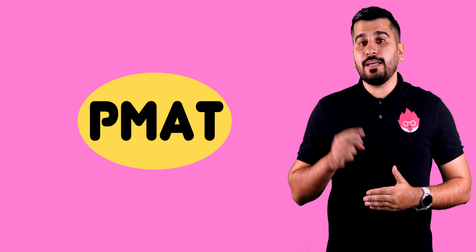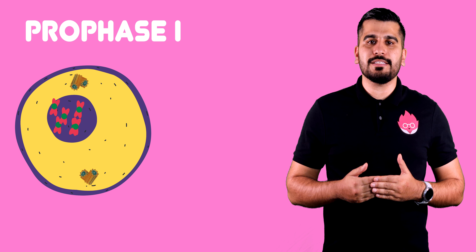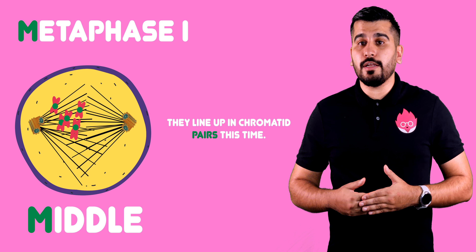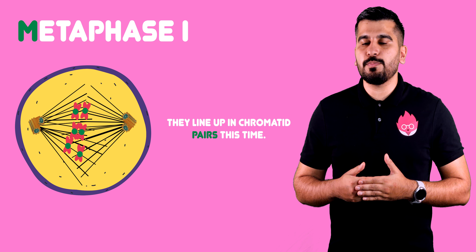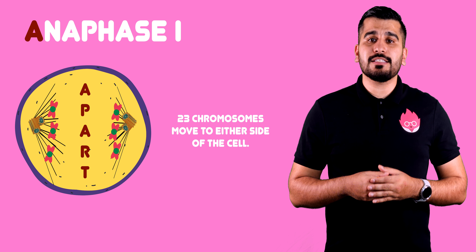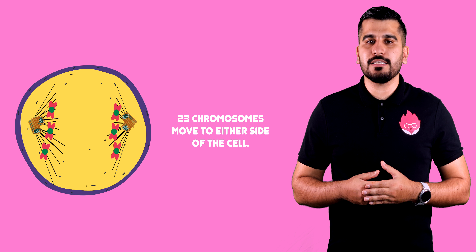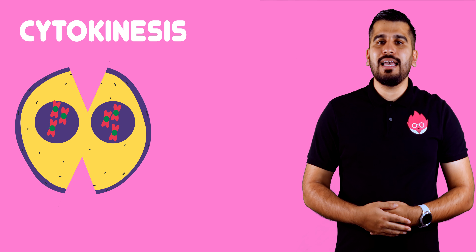In meiosis, you go through PMAT twice. In prophase 1, DNA would have replicated in interphase. The chromosomes pair up in homologous pairs called chromatids. Chromosomes condense and become visible, and the nuclear membrane breaks down. In metaphase 1, chromatids line up along the middle of the cell and attach to spindle fibres. In anaphase 1, chromatids are pulled to different ends of the cell as the spindle fibres shorten. New membranes form around the chromosomes at each end of the cell. Finally, cytokinesis — the cell membrane pinches in and eventually divides into two daughter cells.